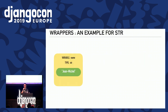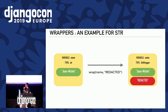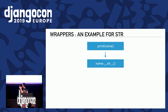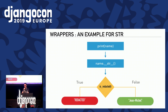We wrap the callables. For instance, if I want to print the name, the object calls the __str__ method. This method has been redefined to check the context — am I supposed to show the original value or the alternative value? If it's supposed to be redacted, then I return redacted; otherwise I return Jean-Michel.